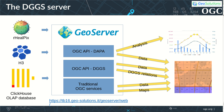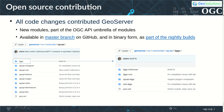GeoSolutions used GeoServer to support the Testbed 16 goals. New modules have been developed using the RealPix and H3 libraries, as well as the ClickHouse database. DGGSs have been exposed via traditional OGC services, via a dedicated DGGS API, as well as a DAPA API. Overall, these implementations support visualization, download, navigation, and analysis on top of DGGS data. In accordance with the testbed requirements, all code changes have been made open source as GeoServer community modules, under the OGC API implementation subsystem.